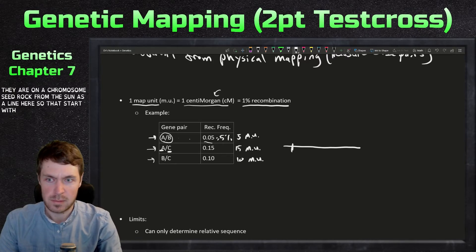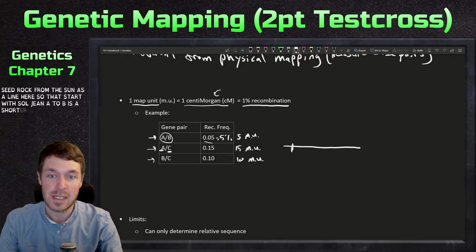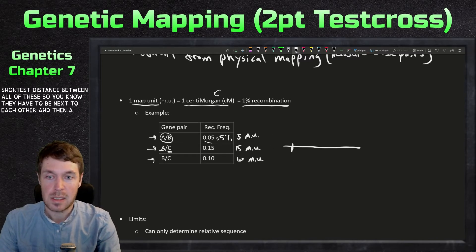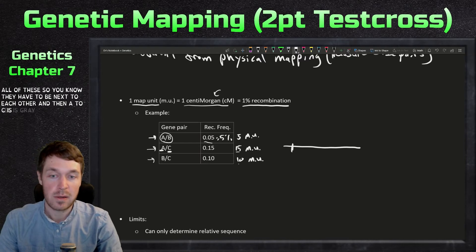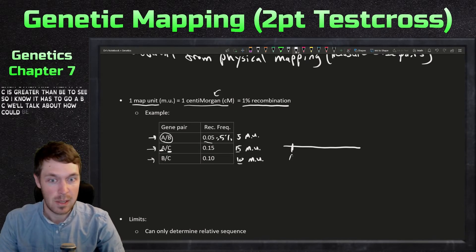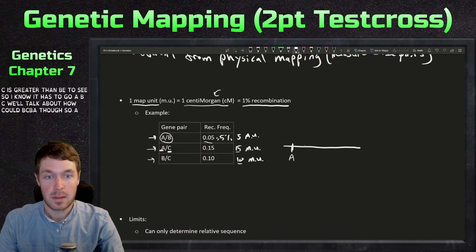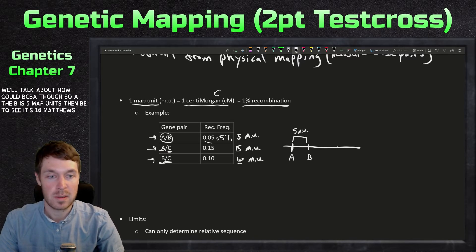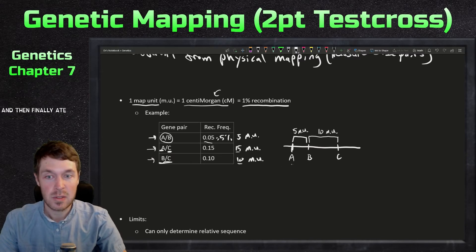You draw a chromosome as a line here. So let's start with—gene A to B is the shortest distance between all of these. Then A to C is greater than B to C. So I know it has to go A, B, C. We'll talk about how it could be CBA though. So A to B is five map units. Then B to C is 10 map units. And then finally, A to C is 15 map units.